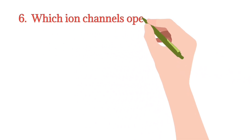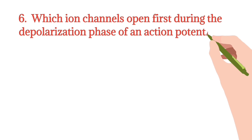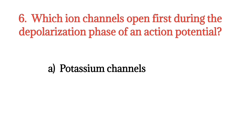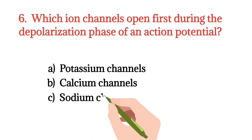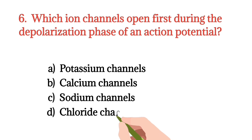MCQ number 6. Which ion channels open first during the depolarizing phase of an action potential? Option A: Potassium channels. Option B: Calcium channels. Option C: Sodium channels. Option D: No right channel. The right option is Option C.